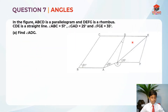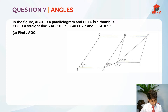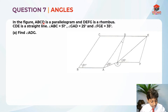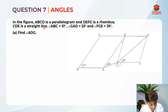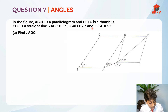This question is testing us on angles. There are two parts to solve this question — part A and part B later in this video. So let's go through part A first. In the figure, ABCD is a parallelogram and DEFG is a rhombus. CDE is a straight line. Angle ABC equals 51 degrees. Angle GAD equals 25 degrees. And angle FGE equals 35 degrees.